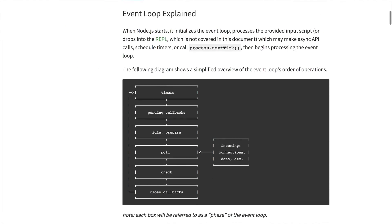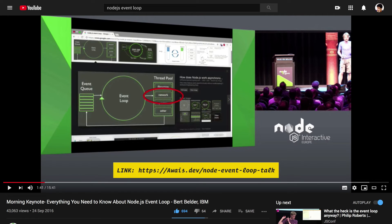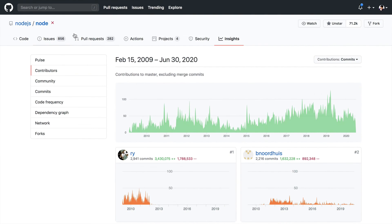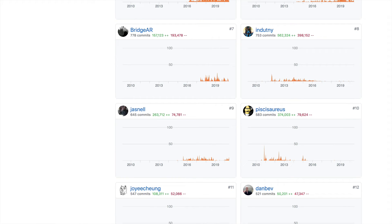The Node.js docs try to build an image of how the event loop works — incoming connections or data, a bunch of timers, pending callbacks, idle or prepare processes, a poll queue, a check phase, and finally close callbacks. If you'd like to dig deeper, I recommend a talk by Bert Belder, one of the core contributors of Node.js early on. You can see his profile on the Node.js repository — he was a core committer active from around 2010.